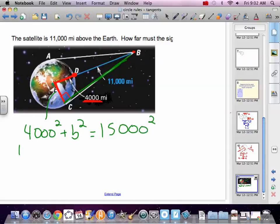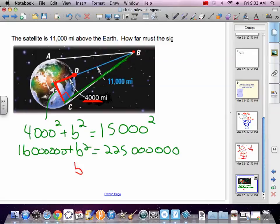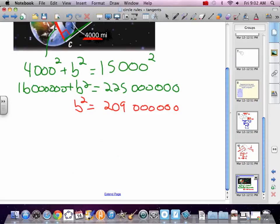All right, so 4,000 squared is going to be 16 with six zeros. You should know that. And 15,000 squared is 15 times 15, 225 with six zeros. Subtract 16 from both sides, so that's 209, no I'm sorry, million, 209 million.